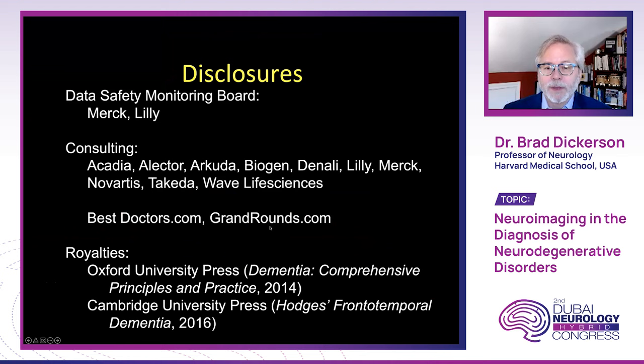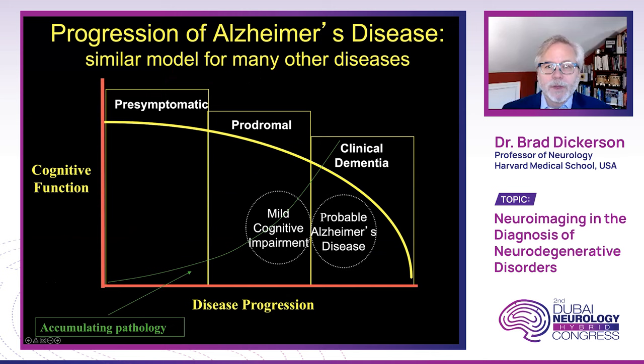This is the overall progression of Alzheimer's disease from a model perspective, with a similar model for many other diseases like it, where people go through a pre-symptomatic phase with accumulating pathology, gradually beginning to be symptomatic in a prodromal stage, and ultimately developing dementia.